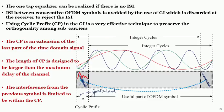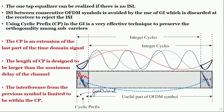The copied portion — shown in red in the diagram — is placed at the front as the cyclic prefix. This particular portion goes here, and this other portion goes here. That is how the cyclic prefix extension is done. With this cyclic prefix there are many advantages we are going to discuss.